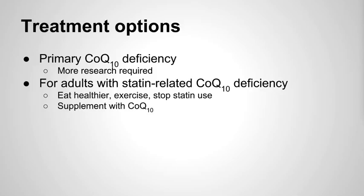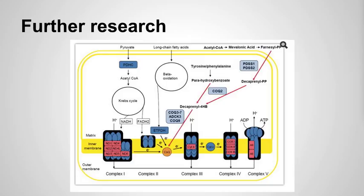One reason secondary CoQ10 deficiency can occur is multiple acyl-CoA dehydrogenase deficiency (MADD), though it's not a universal feature since some MADD patients present with normal CoQ10 levels. Some patients with primary and secondary types do show positive signs with CoQ10 supplementation, but overall it's very hard to determine how to treat this disease given how differently it presents and responds to treatment.